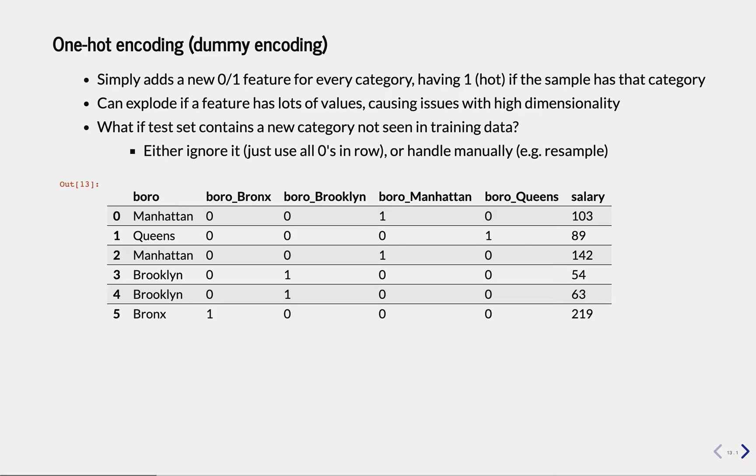So in that case you want to, for instance, look at one hot encoding, also known as dummy encoding. So it's a very simple technique where we take all the values, so we have Manhattan, Queens, Brooklyn, and Bronx, and for each category we create a new feature.